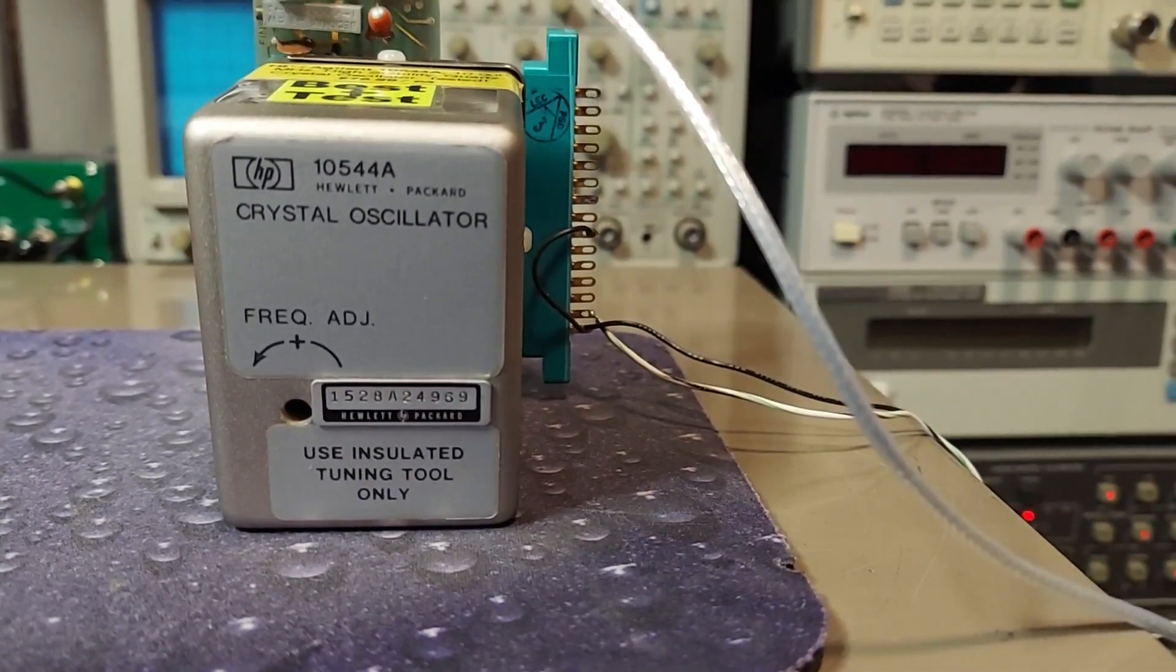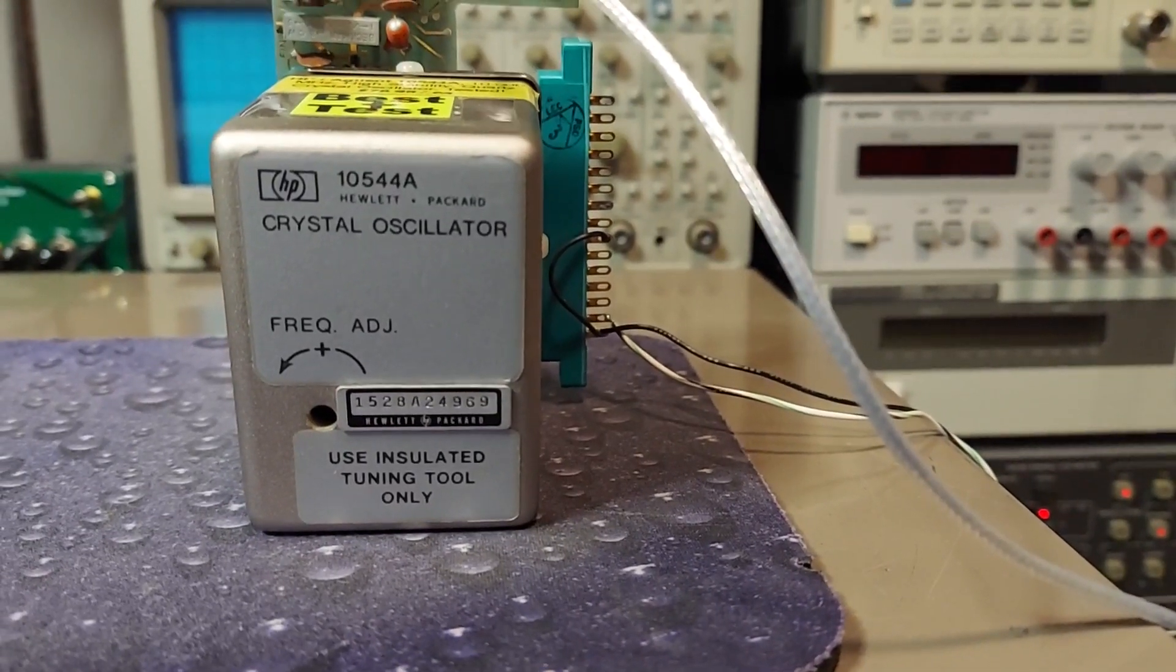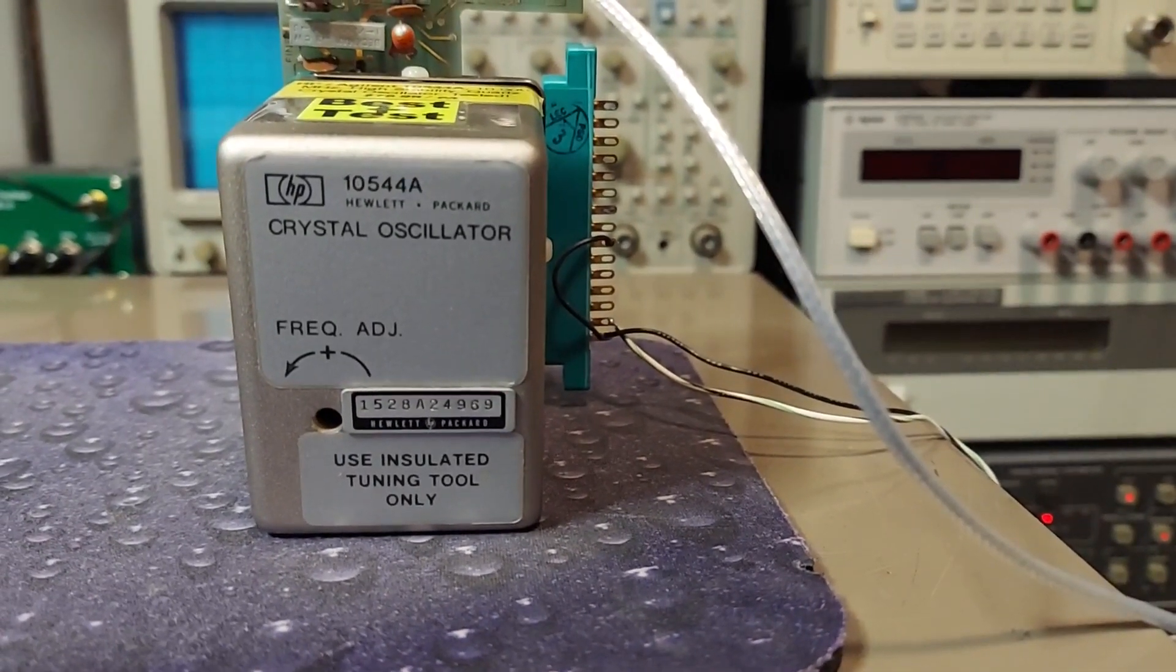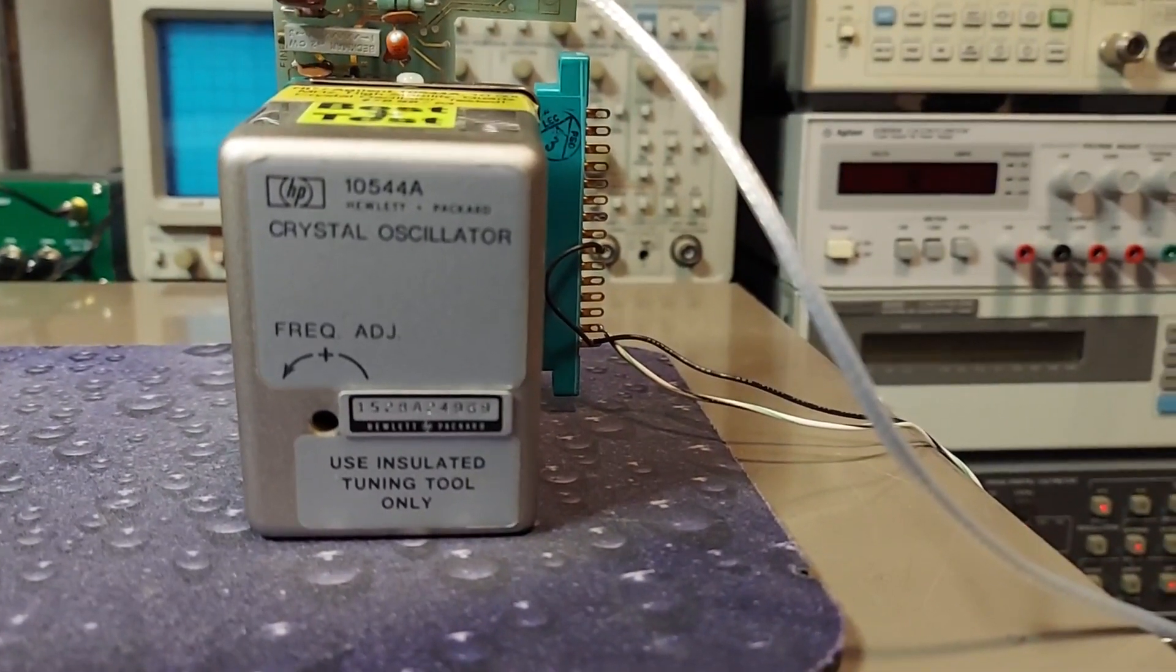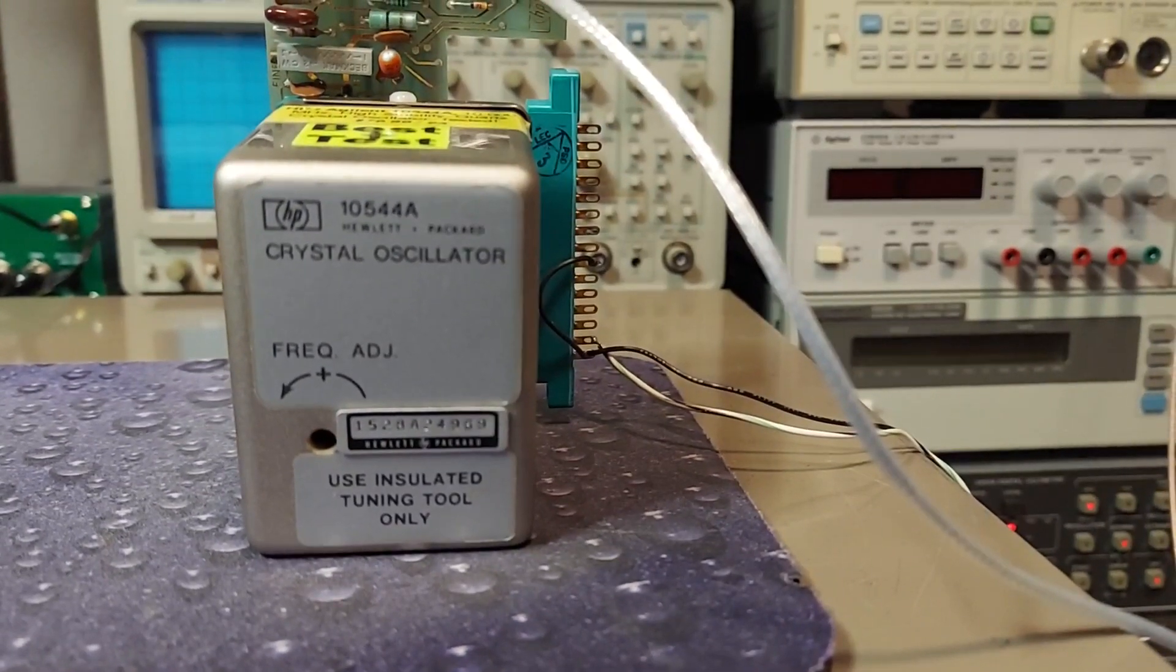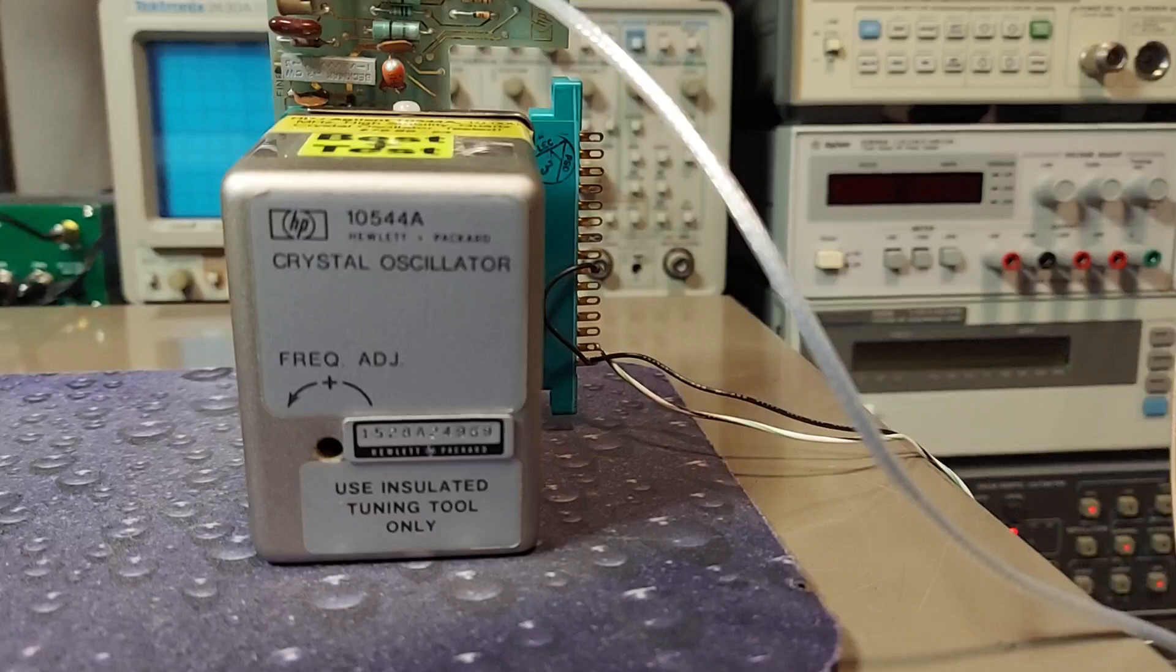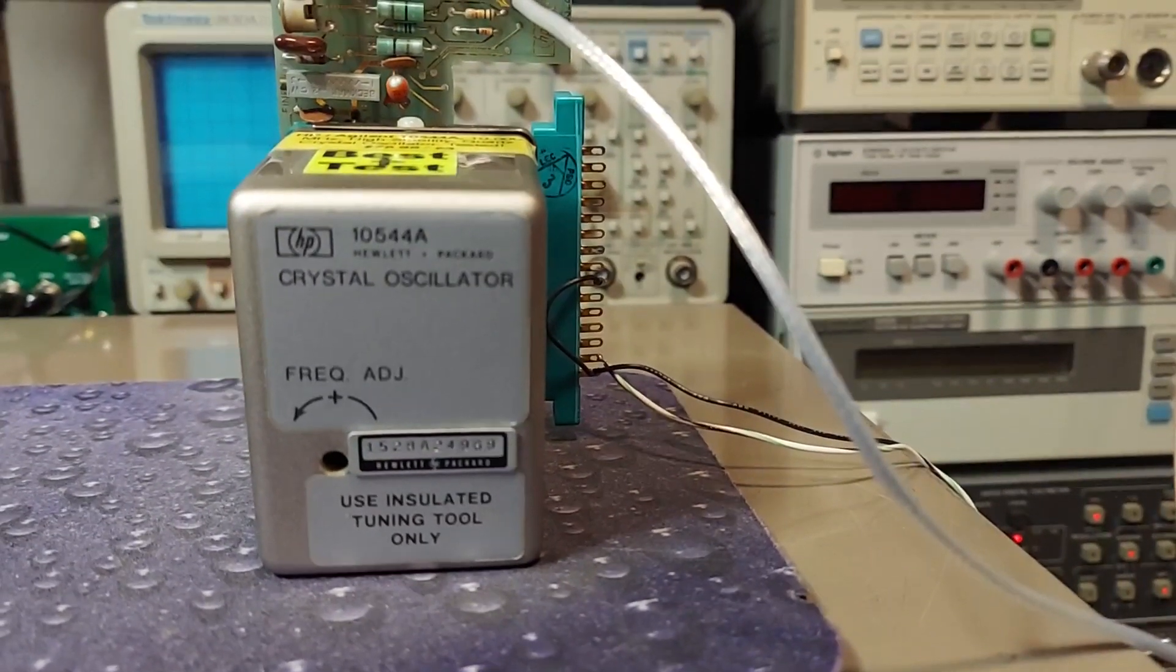The 10811A offers better stability and is essentially pin compatible with this version. So if you bought an old frequency counter or some other device that has this reference in it and it's bad, you can simply swap in a 10811A, do the frequency adjustment, and you're golden.